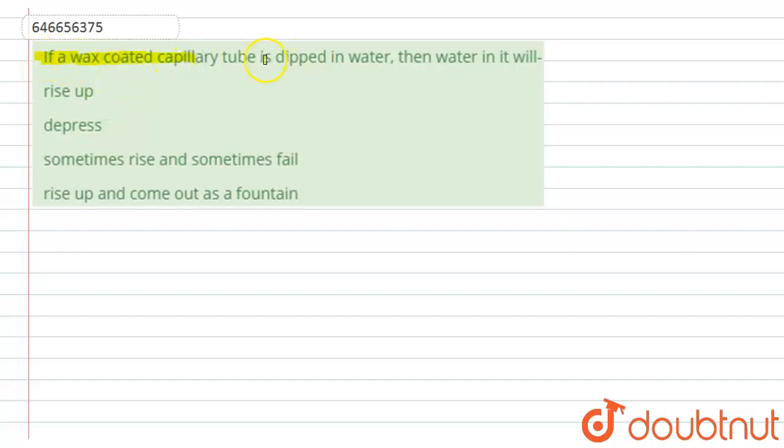a wax-coated capillary tube is dipped in water, then water in it will: rise up, depress, sometimes rise and sometimes fall, or rise up and come out as a fountain. So let's see the solution.